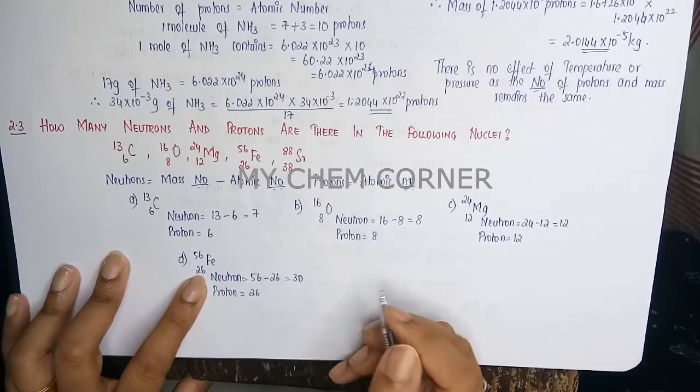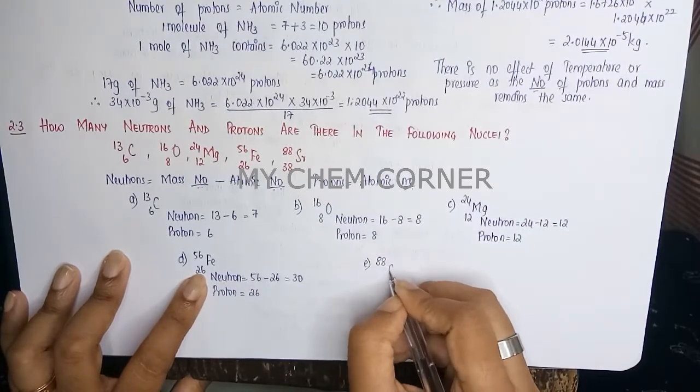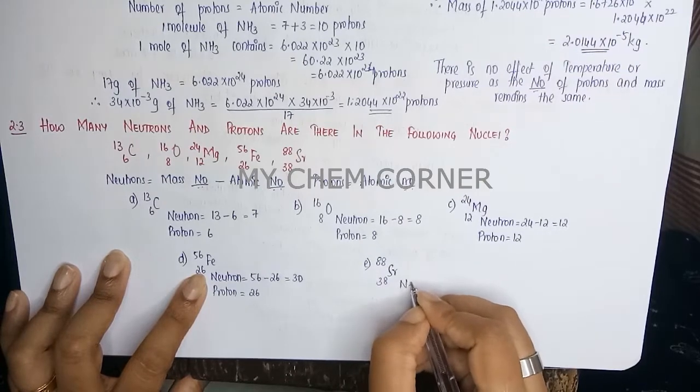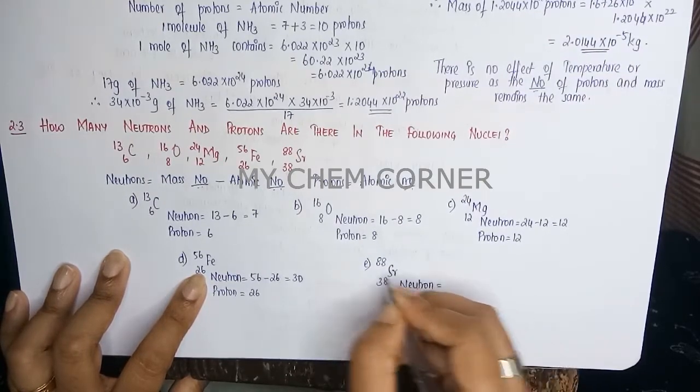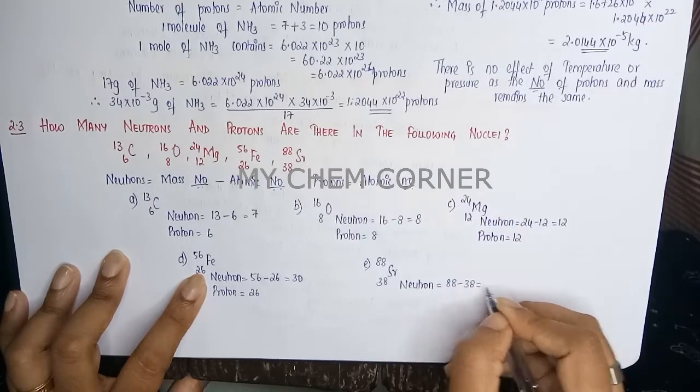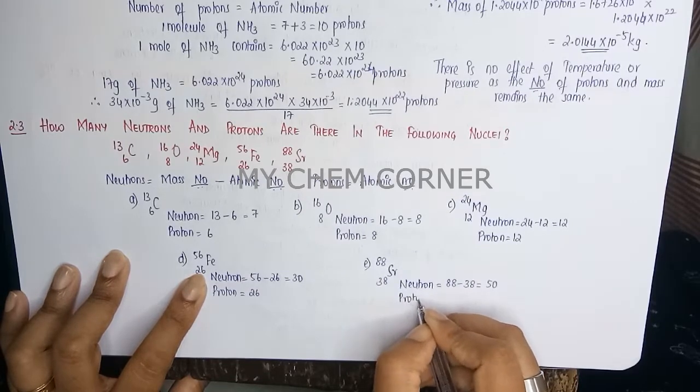And the last one is for Strontium. For Strontium, count of neutrons is 88 minus 38 which equals 50. Proton count is just the atomic number, so that is 38.